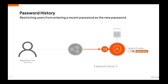WSO2 Identity Server enables restricting the user from re-entering recently used passwords as a new password. When a user is attempting to change the password, the system will restrict the user from entering the most recently used passwords. You can configure the number of most recently used password changes to consider for this. For example, if we have set this configuration to 3, the user will not be able to reuse any of the 3 most recently used passwords when setting a new password.